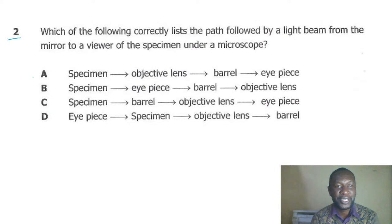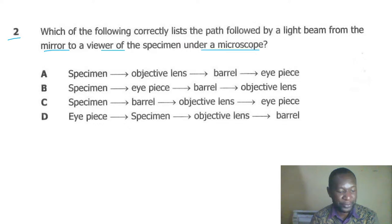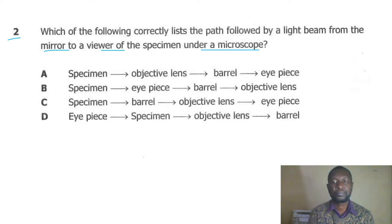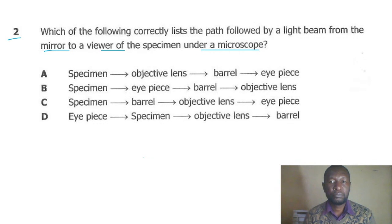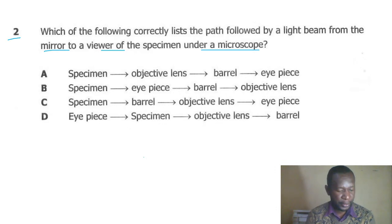Question two asks: which of the following correctly describes the path followed by a light beam from the mirror to the viewer of the specimen under the microscope?